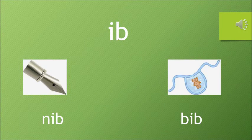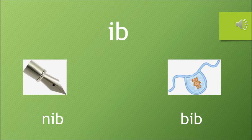So now let's have a quick recap of the I words. The first I word we are doing is Ib. Sound of I is E, sound of B is B, so it is Ib.